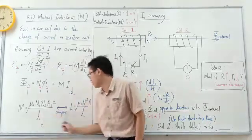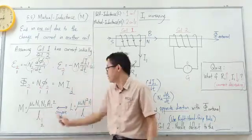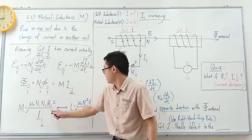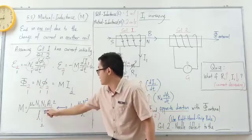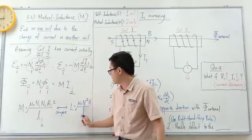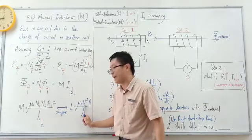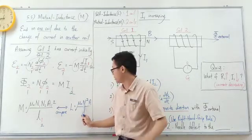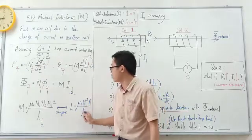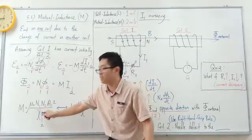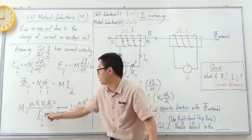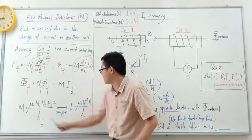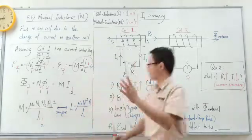Comparing this with self-induction from last time, the formula is almost the same. For self-induction, it was N squared because it is the same single coil with the same number of turns. For mutual inductance, it involves two different coils, so we have N1 times N2 instead. The area and length parts are otherwise the same.